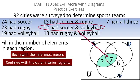Continuing, I might look at the overlap of soccer with volleyball. I'm told there are 12 of those. I already have seven, so I need five more.